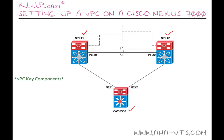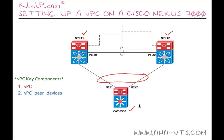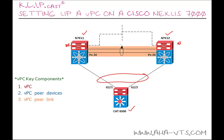Let's go through some key components necessary for our VPC to be operational. First, the VPC itself — the combined port channel from our VPC paired devices to our downstream device. Next, we have the VPC paired devices, which are the paired devices connected with that special type of port channel — in this case, our Nexus 7000s. Then we have the VPC peer link, which is used to synchronize states between the VPC paired devices, and importantly, this link must be a 10 gigabit link.